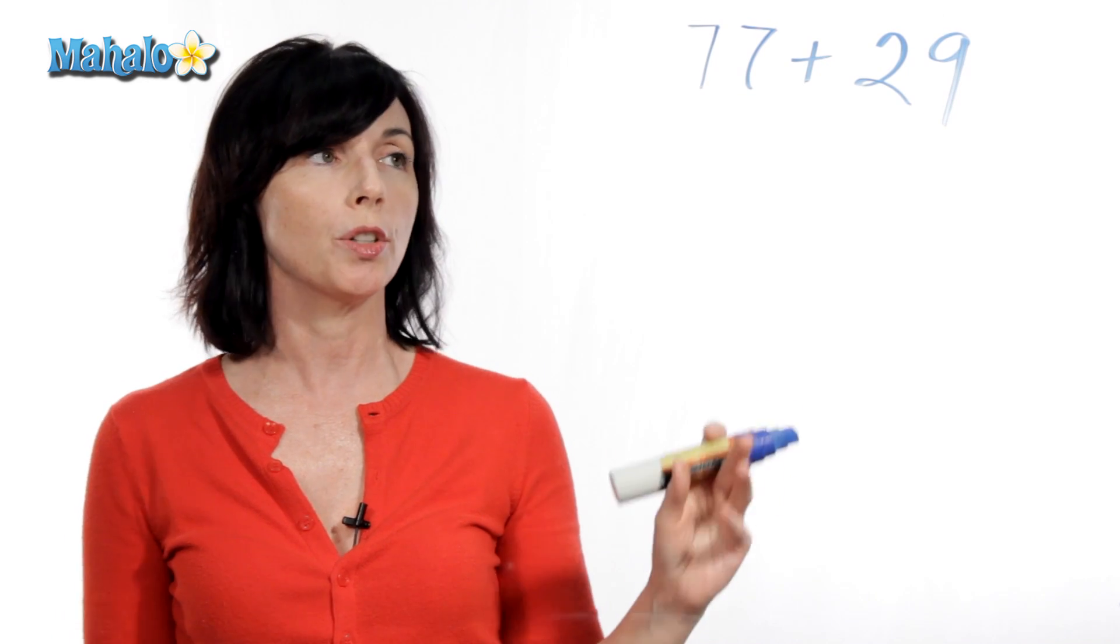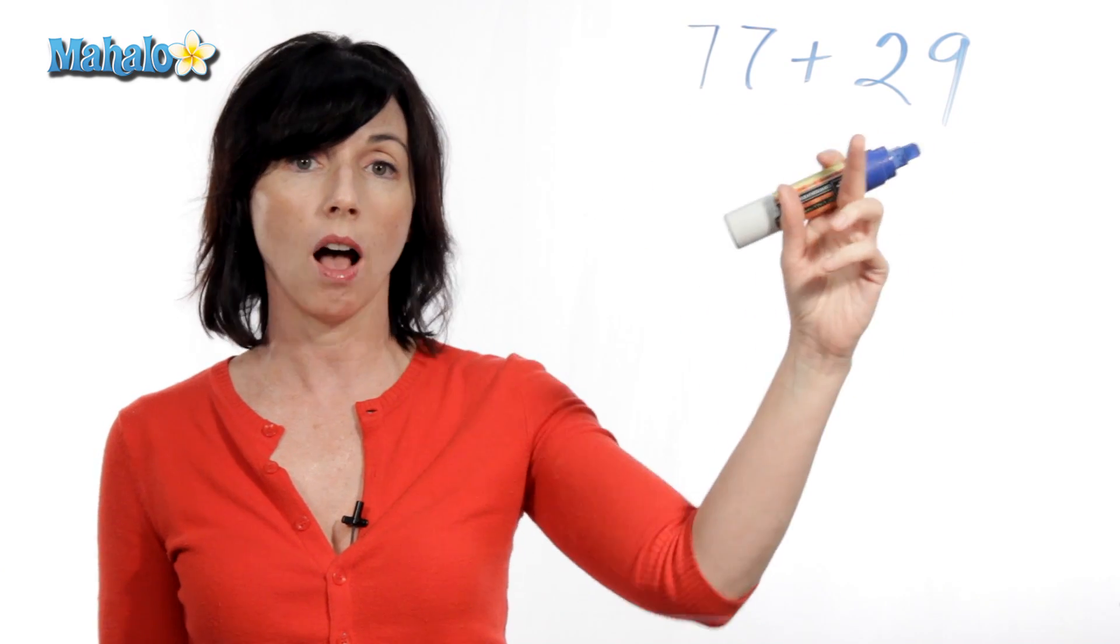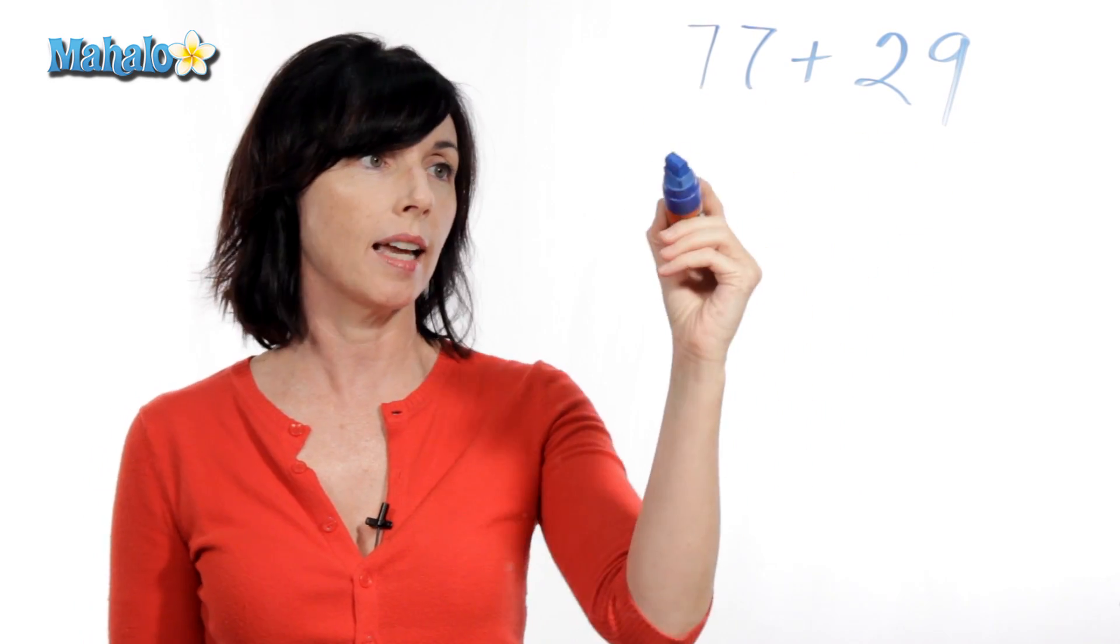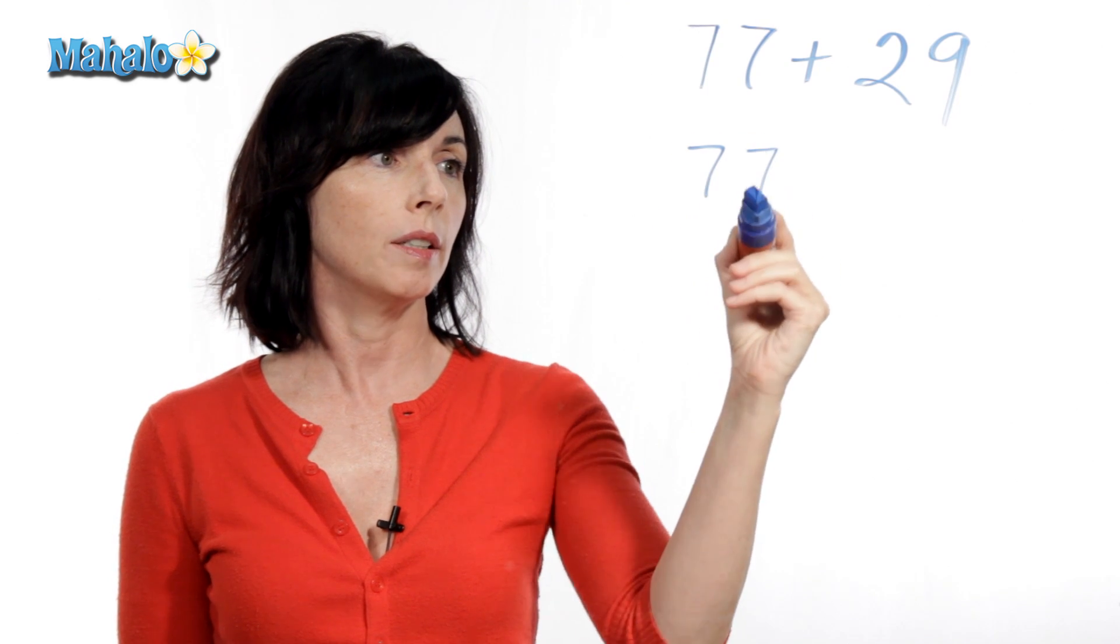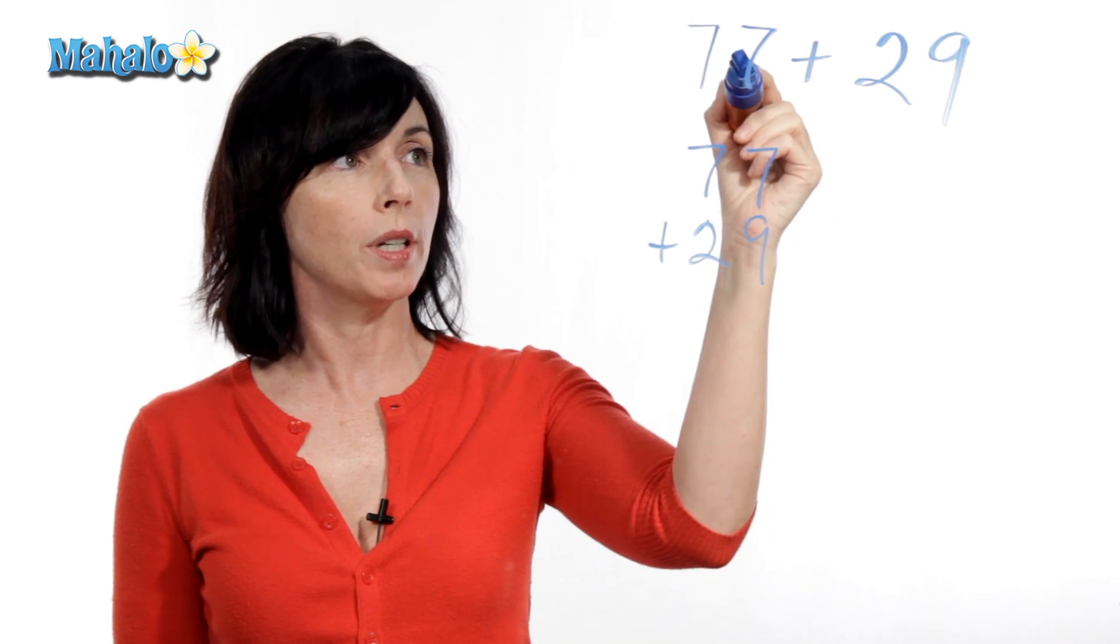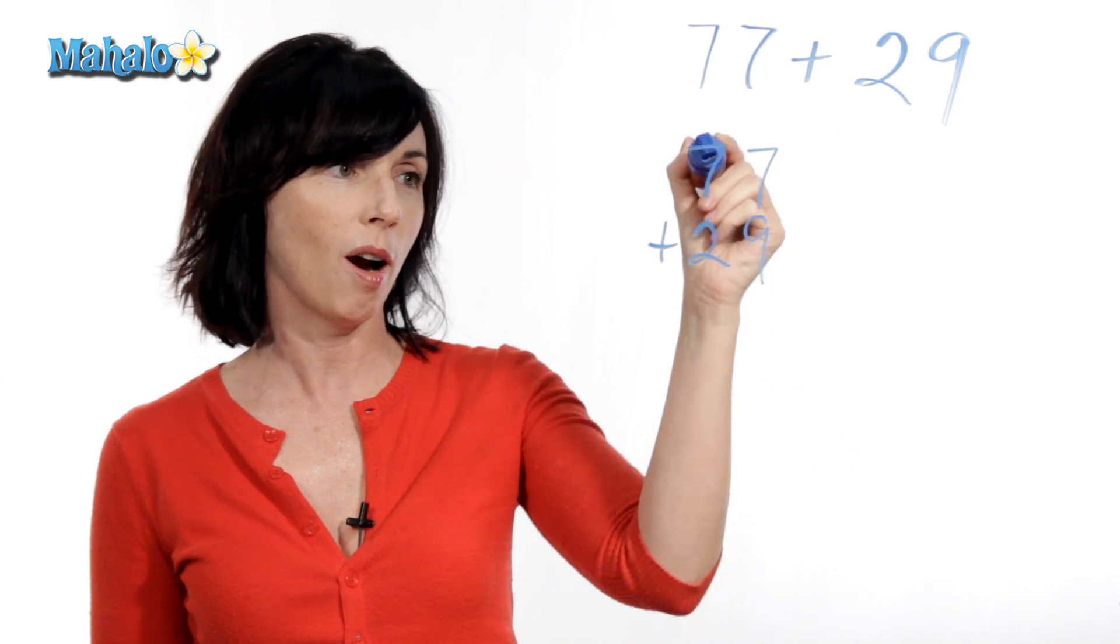So what you want to do is make sure that you line up the ones column in each number and the tens column in each number. So let's rewrite this vertically like this, 77 plus 29. Now, both the numbers in my ones column are lined up, and both the numbers in my tens column are lined up.